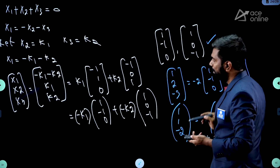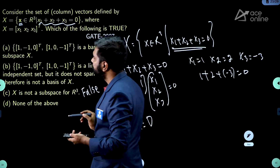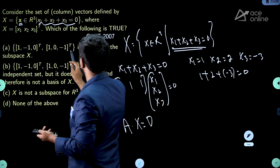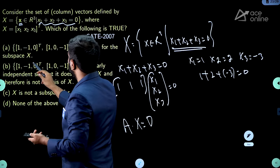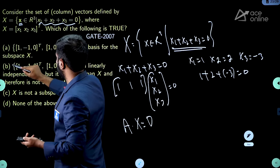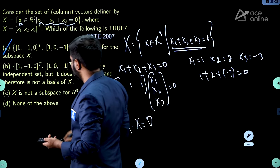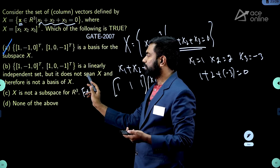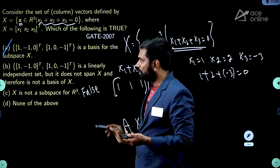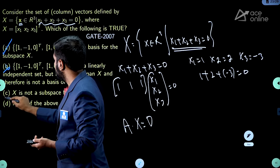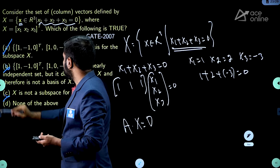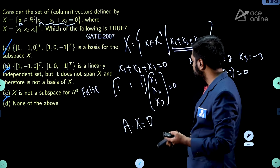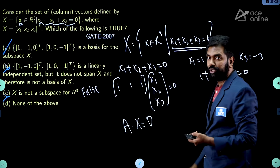These two vectors (1,−1,0) and (1,0,−1) form a basis for the subspace x. Option B says they are linearly independent but do not span the given set — this is wrong. Option C is also wrong. The answer to this problem is option A.